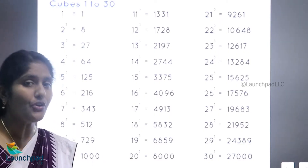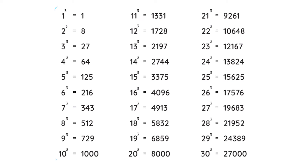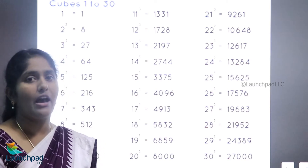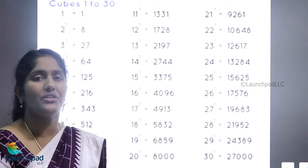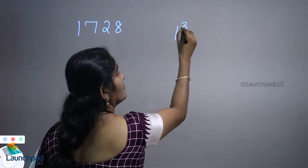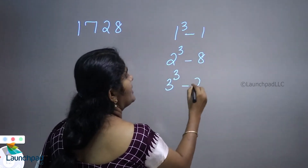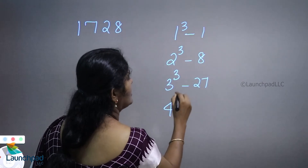First of all, we want to know the cube values from 1 to 30. At least you should memorize 1 to 10 cube answers first. Afterwards you can memorize 1 to 30 cube answers, as knowing these values is very helpful to reduce your calculation time. 1 cubed is 1, 2 cubed is 8, 3 cubed is 27, 4 cubed is 64.